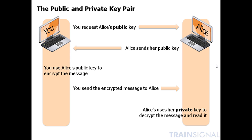Now, this is great for confidentiality. Nobody can intercept that message in between and decrypt it because they don't have Alice's private key. But how do we really authenticate? Someone could be pretending to be Alice using a different public-private key pair, send you their public key, decrypt the message with the private key, and you'd never be the wiser.